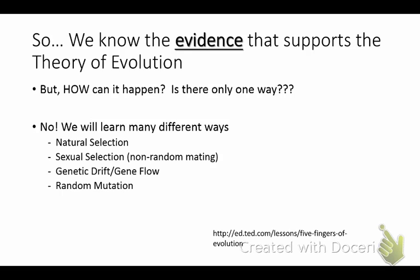Good — embryology. At station five, we looked at embryos and how development is similar. The fossil record is another thing that supports evolution. Homologous and analogous structures — very good. And DNA sequencing, amino acid sequencing. So those were all different things that we looked at.